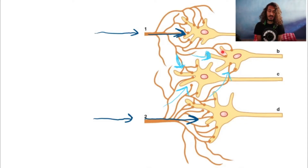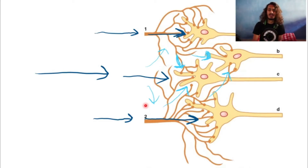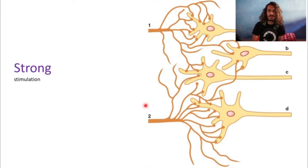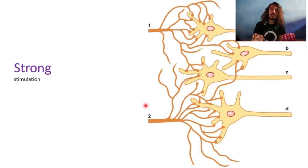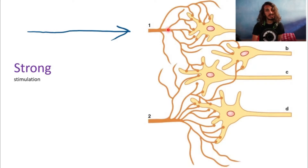Once you understand this, we move to occlusion first and then subliminal fringe. One major thing to understand between these two is the nature of the stimuli — that is the first and most important difference. First, we are going to give a very strong stimulation.